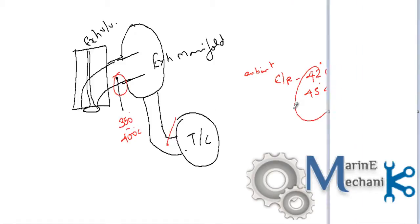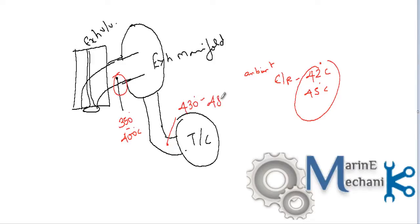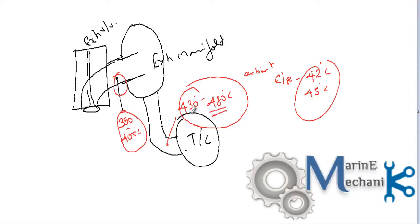This will vary with respect to ambient conditions. At the turbocharger inlet it will be of the order of 430 to 480 degrees Celsius. You must have encountered the question: why is the temperature measured at the exhaust valve lesser than the turbocharger inlet? This video will provide in-depth insight into this phenomenon, elaborating on what's exactly happening at the exhaust valve and at the turbocharger inlet.